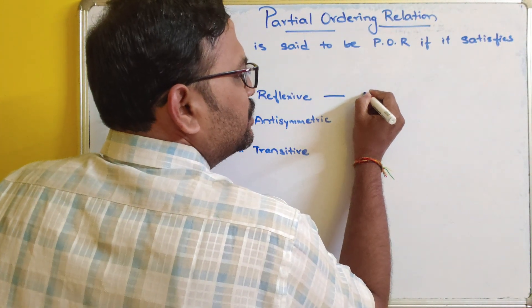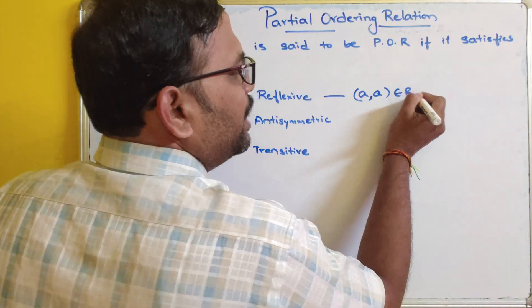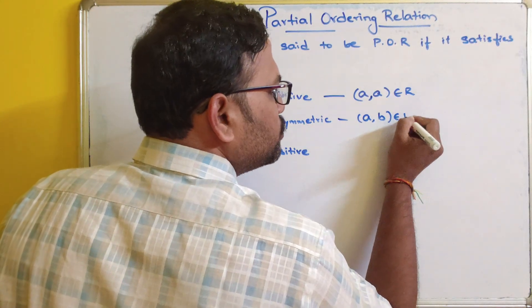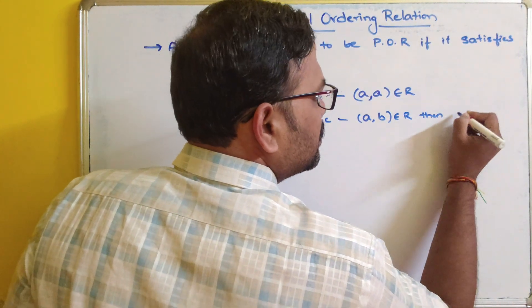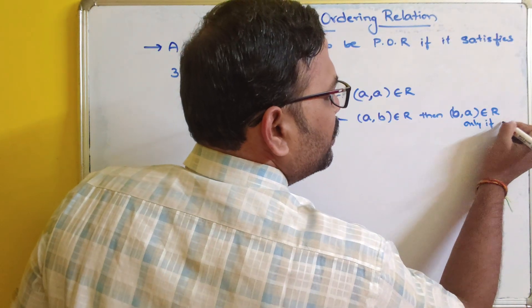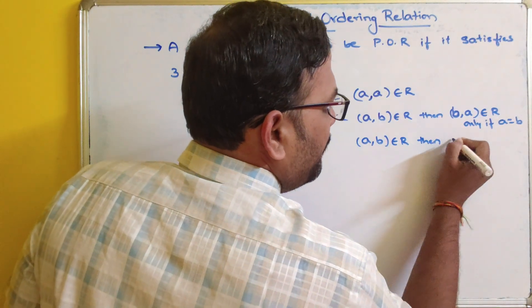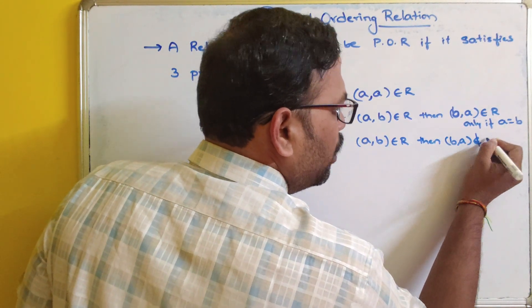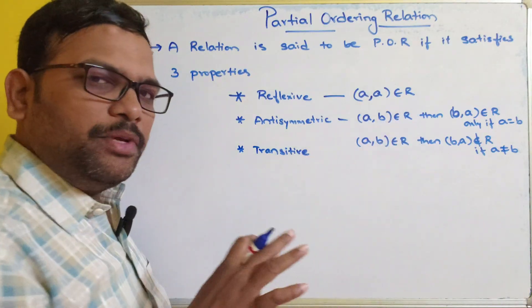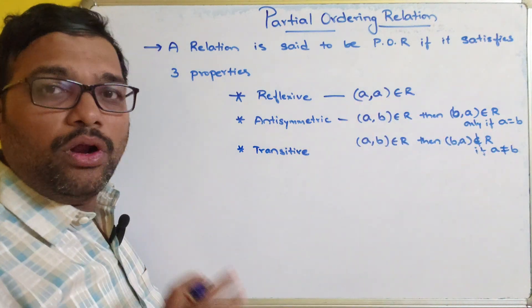Reflexive: the element of a set is mapped with itself. Antisymmetric: if (a, b) belongs to R, then the inverse (b, a) should belong to R only if a equals b. And if (a, b) belongs to R, then (b, a) should not belong to R if a is not equal to b. So if a equals b, the inverse will also be the same and can be in the relation. But if a is not equal to b, then (b, a) should not belong to R.